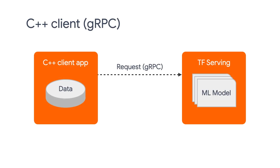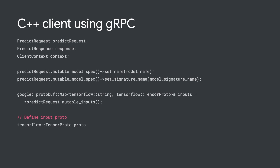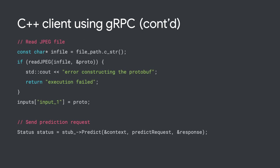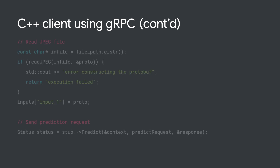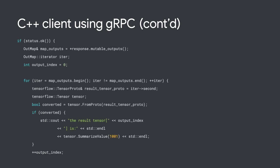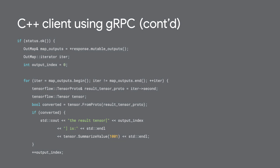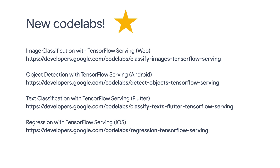Lastly, let's take a look at C++. C++ is actually very similar to Python. We specify our model name and signature name here. Then we read the image and use the client stub to send the request. After we get the response, we can extract the output tensor. Note that here we did not generate the client stub code either, since the TensorFlow Serving repository has already done that for us.